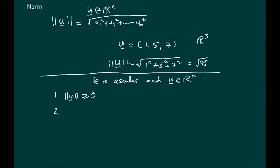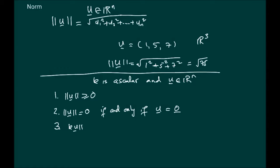Another property is that if the norm of u equals 0, if and only if u is in fact the zero vector itself. So any non-zero vector would have a non-zero norm. Another property is that the norm of k times u, where k is a scalar multiplied by u, is simply the absolute value of k multiplied by the norm of u.